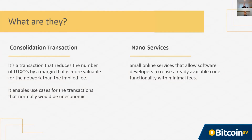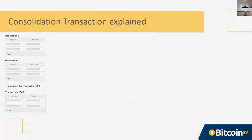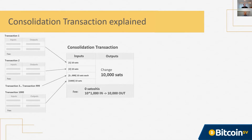Nano services basically allow services to piggyback on top of transactions that were already going to happen anyway. For example, on the left I've got a list of a thousand transactions — we're essentially feeding a lot of outputs of a value that would normally be considered dust into a transaction as inputs. We add all of the values of those inputs together into a single output, consolidating the value from one thousand inputs down to one output. You can see on the output side we've got ten thousand satoshis, which is a useful amount. If the right conditions are met, the Bitcoin SV software classifies this as a consolidation transaction and allows it to go through with zero fee.